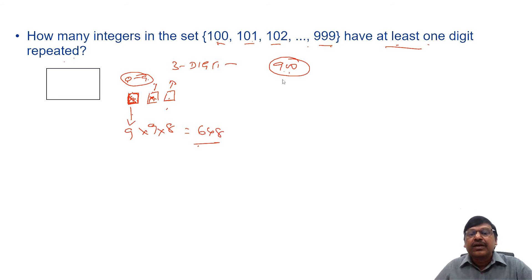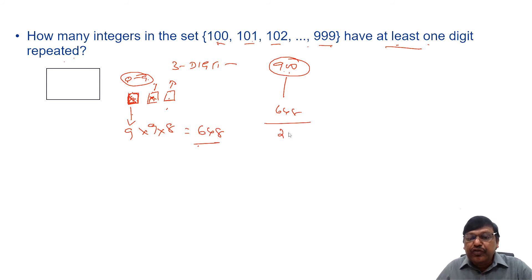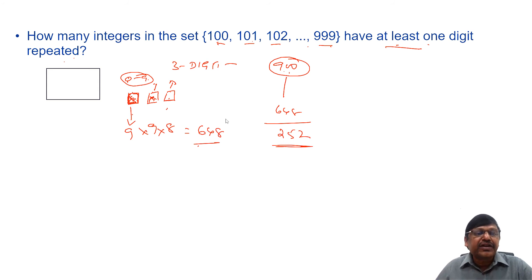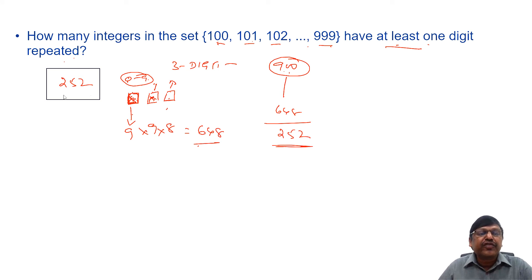Therefore, the number of integers with at least one repeated digit is 900 − 648 = 252. Our answer is 252. Thank you.